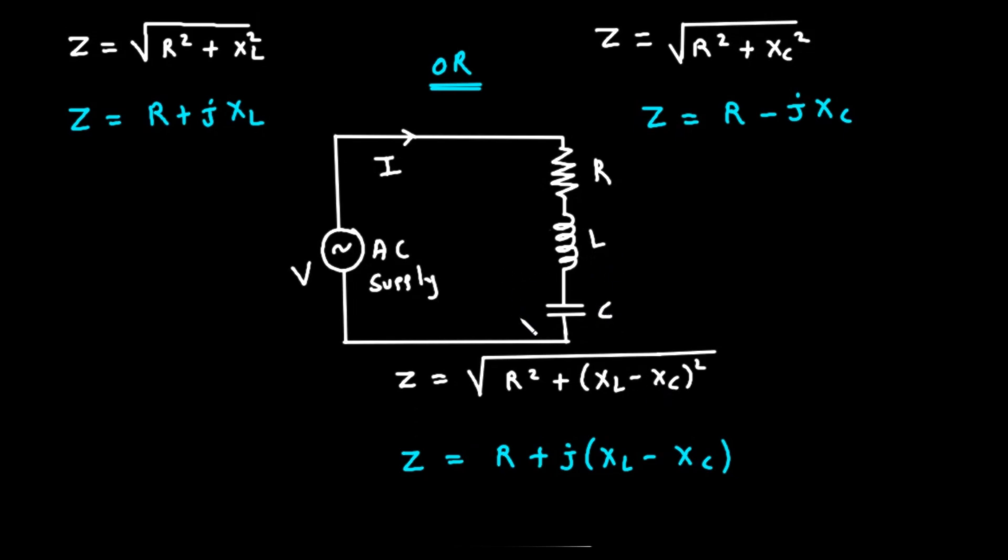So, the complex impedance for an RLC circuit is Z equals R plus j times the quantity X sub L minus X sub C. The total magnitude of the impedance is therefore Z equals the square root of R squared plus the square of the quantity X sub L minus X sub C.